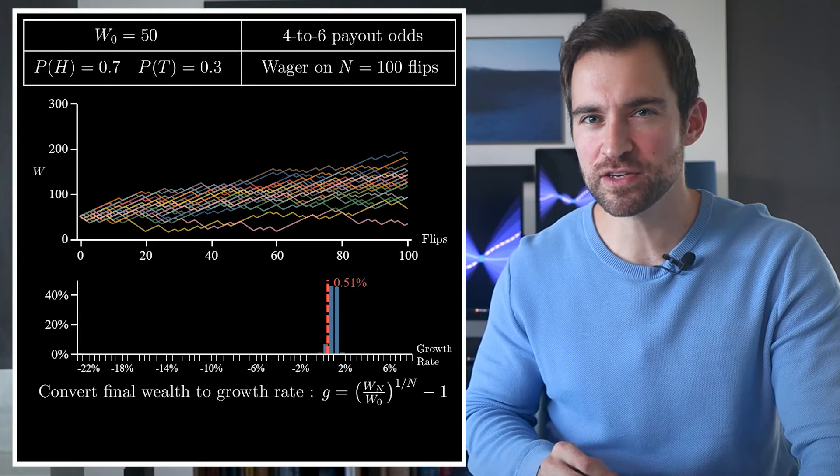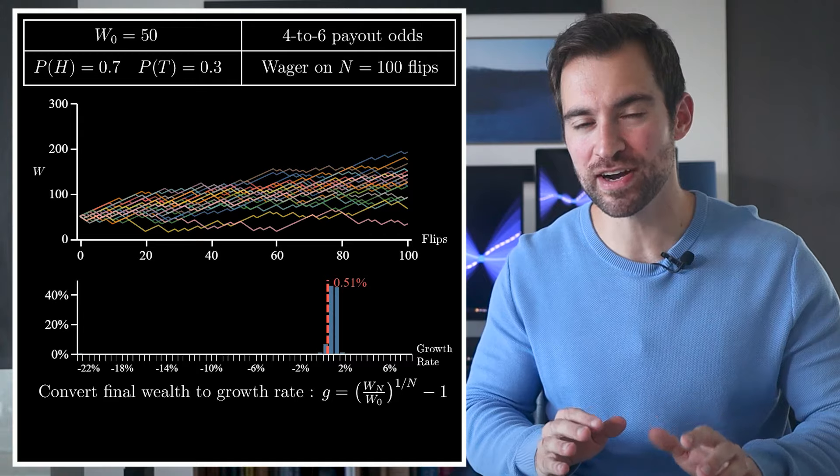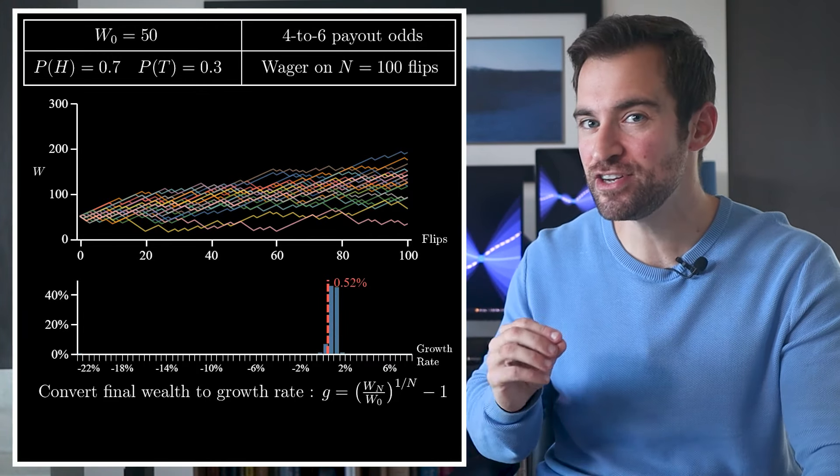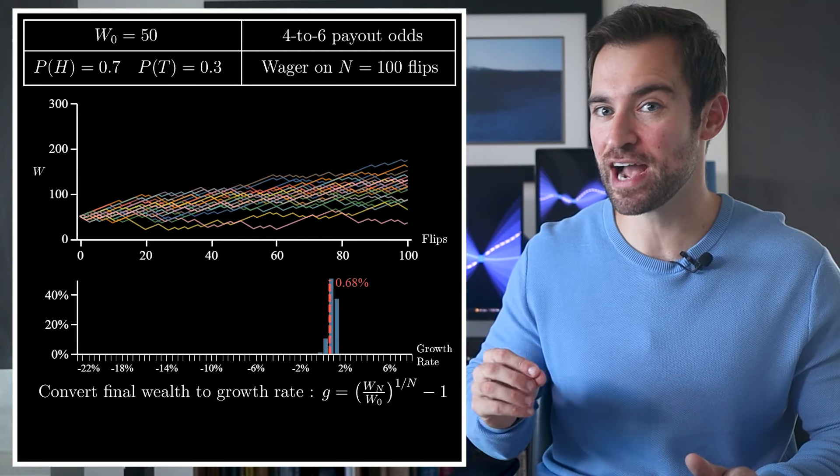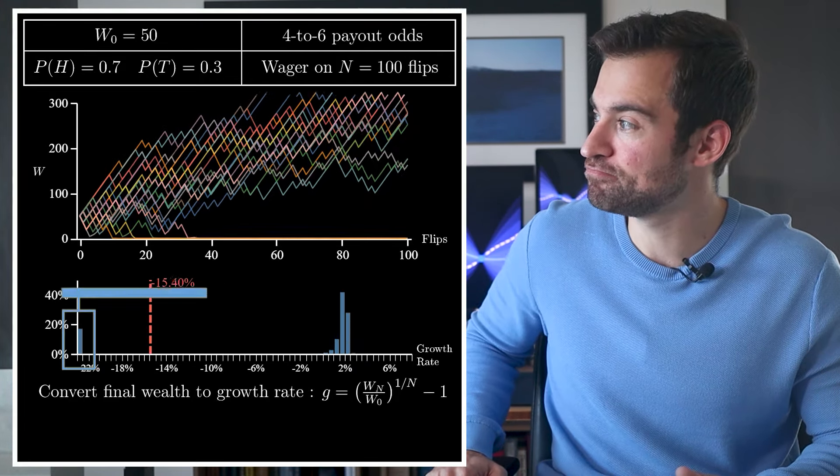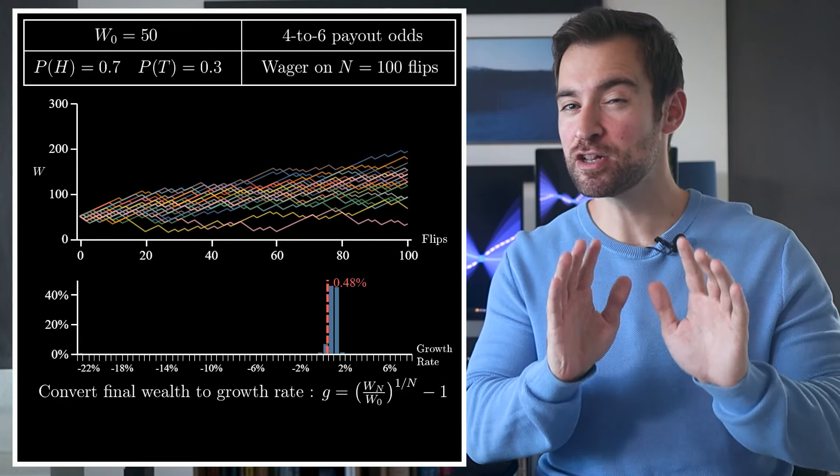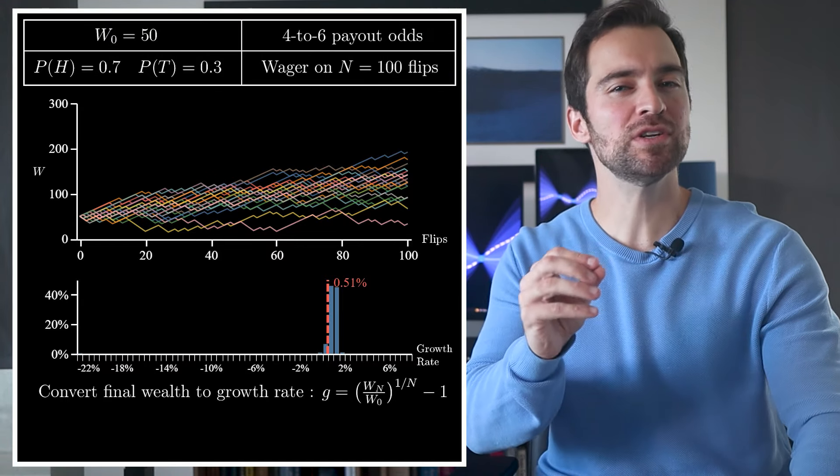which gets you to about 80-ish dollars from $50. Not bad, but it begs the question, what strategy should we use such that the expected growth rate is highest? For example, we could change our constant dollar wager to a few different values, and that would change our average growth rate. So out of all possible strategies,